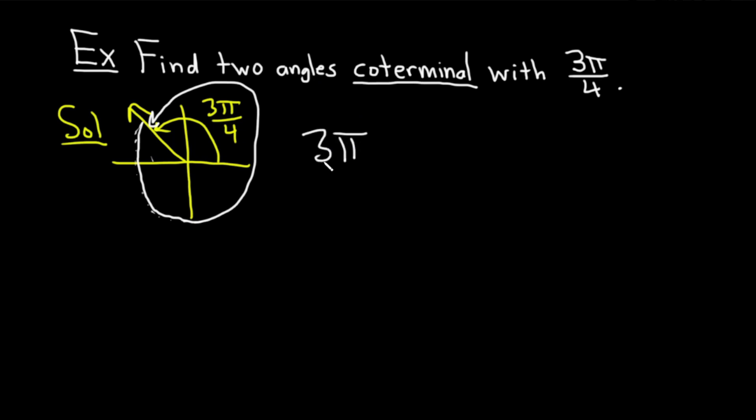So, it's 3 pi over 4 plus 2 pi. To add these numbers, you basically need the second number, 2 pi, to be a number over 4. So, you can do it in your head. You can just say, oh, 2 pi is the same as 8 pi over 4. That's what I usually do. But if you're not there yet, you can write it like this, 2 pi over 1. And then you can multiply by 4 over 4.